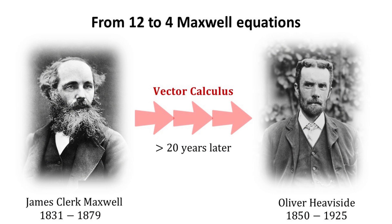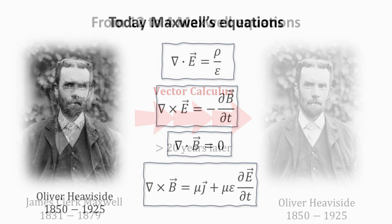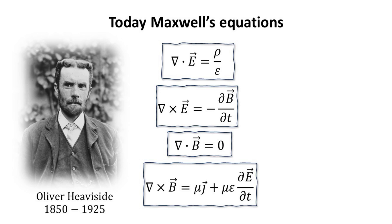It took more than 20 years before Oliver Heaviside rewrote the fundamental equations of Maxwell's treatise on electricity and magnetism into a new and more compact form with his invention of vector calculus. These are the four Maxwell equations published by Oliver Heaviside in 1884, which by the late 1890s had become the standard Maxwell equations for electrodynamics.